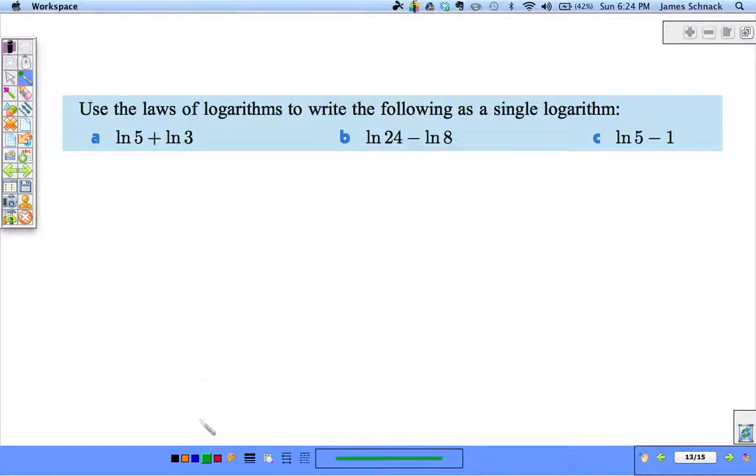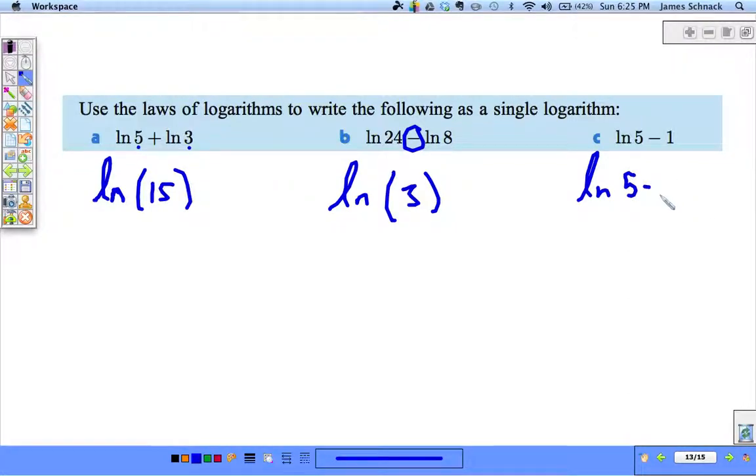So I hope that you pause the video, try the example, restart it, pause it, restart it, pause it, restart it, and go through the video like that. So here we go. Three examples. I'm going to pause in between each so you can pause if you need to. Here we are. So this becomes natural log of 15 - we take the 5 and the 3, multiply them together. Natural log of 3. 24 divided by 8 since we're subtracting. And here this becomes natural log of 5 minus the natural log of e. The natural log of e is 1. So this becomes natural log of 5/e.